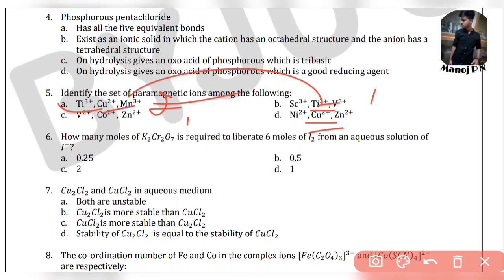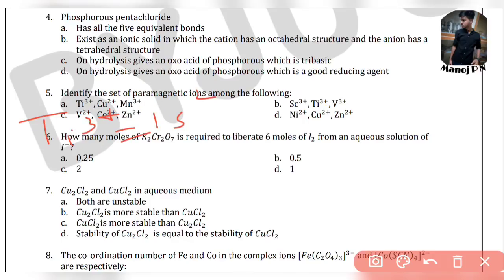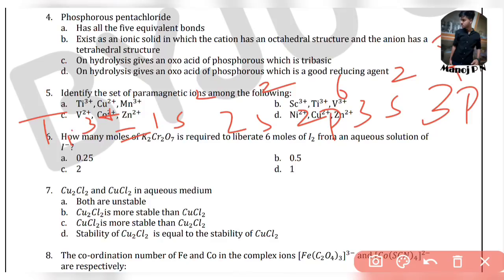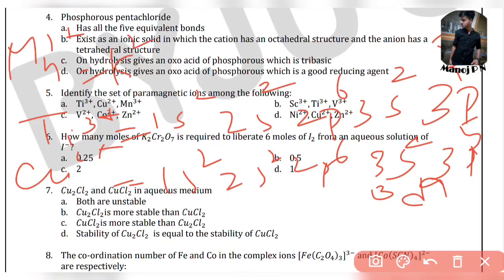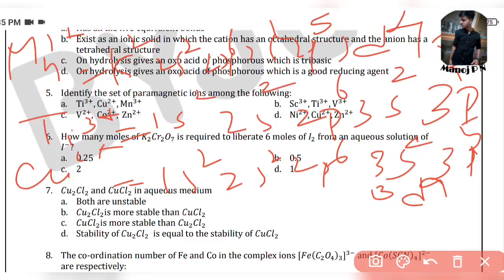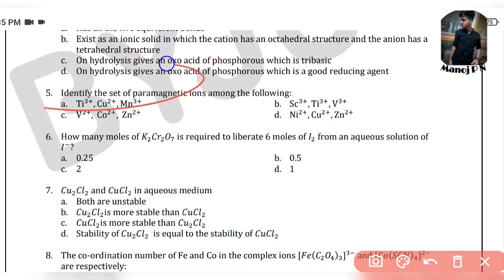Let's analyze the electronic configurations. Ti3+ has configuration 1s2 2s2 2p6 3s2 3p6 3d1 — paramagnetic. Cu2+ has configuration 1s2 2s2 2p6 3s2 3p6 3d9 — paramagnetic. V3+ and V2+ also have unpaired electrons — paramagnetic. So options containing Ti3+ and Cu2+ as paramagnetic behavior are correct.